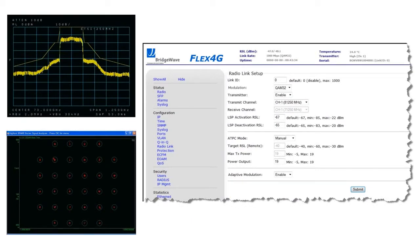Setting a new standard in spectral efficiency and performance, BridgeWave's advanced digital signal processing techniques used in Flex4G provide line rate, full duplex, one gigabit per second in an industry-standard 250 megahertz channel. While other solutions use 64-QAM to achieve this, Flex4G uses only 32-QAM.